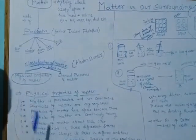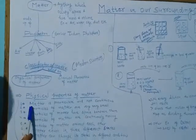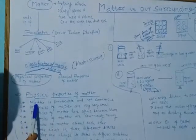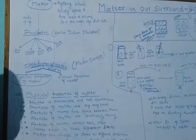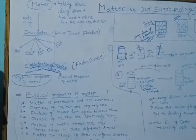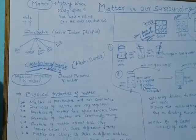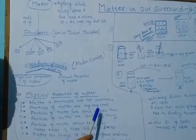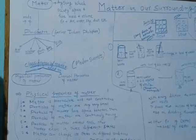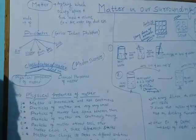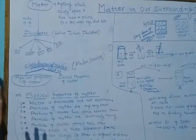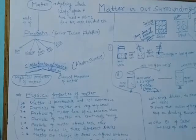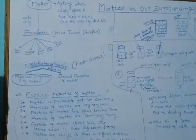The first physical property is matter is particulate and not continuous. Continuous means matter is not a single unit but is made up of many units, and these units are called particles.